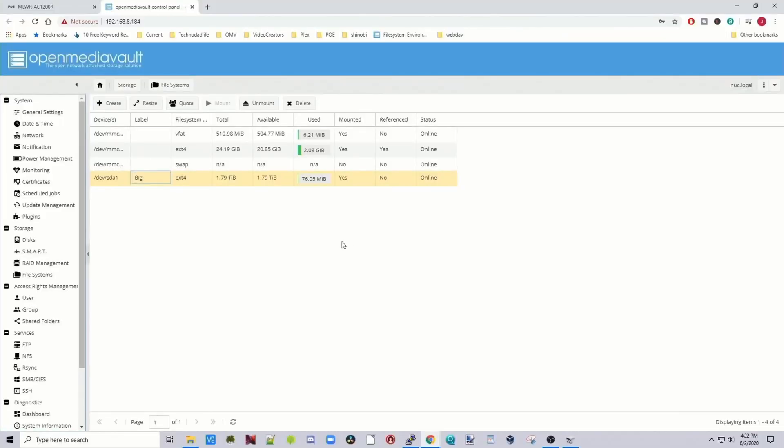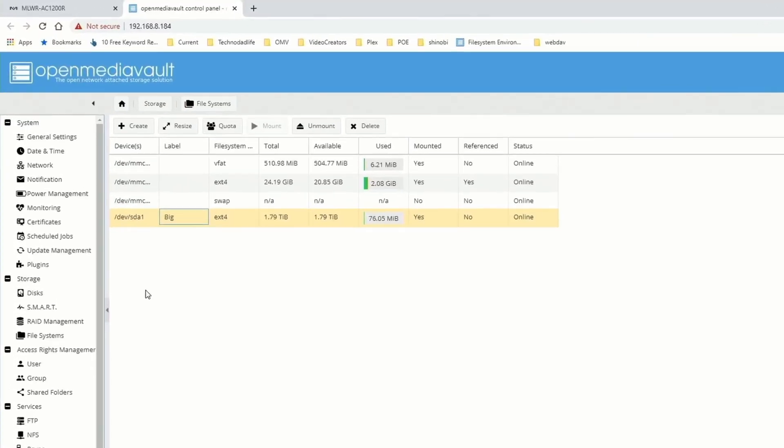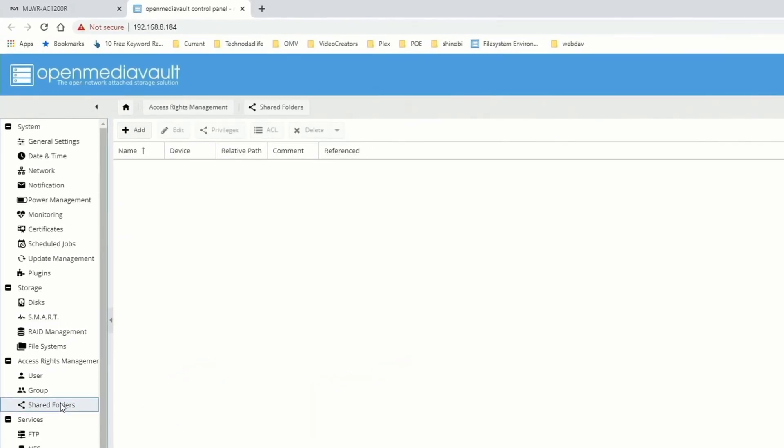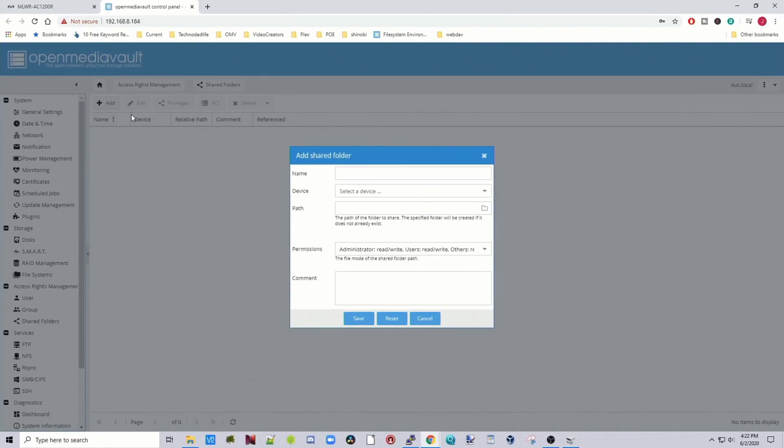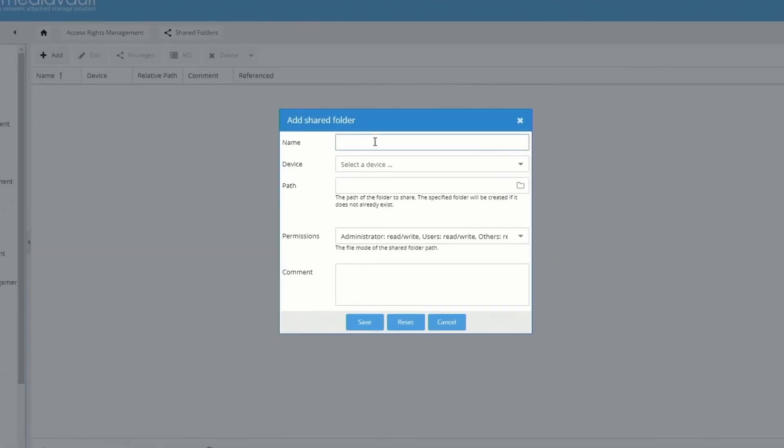Once that's done, next we're going to click on Shared Folders. We're going to click on Add. First we need to name our shared folder. We're going to name it Very. Then click on our big drive.